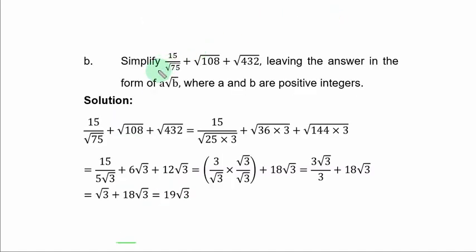Question 1B: Simplify 15 over root 75 plus root 108 plus root 432, leaving the answer in the form of A root B, where A and B are positive integers. Now we have single forms there, so let us express them in basic form. In basic form, you try to get the factor of the number that is a perfect number. In 75 you have 25 times 3. In 108 you have 36 times 3. In 432 you have 144 times 3.